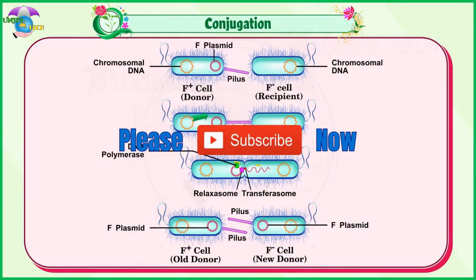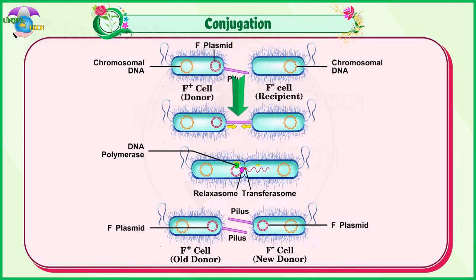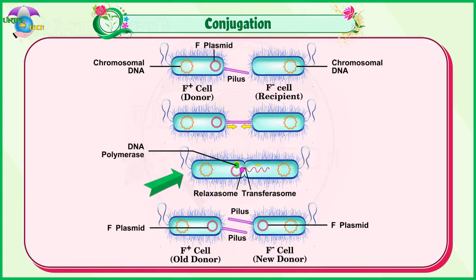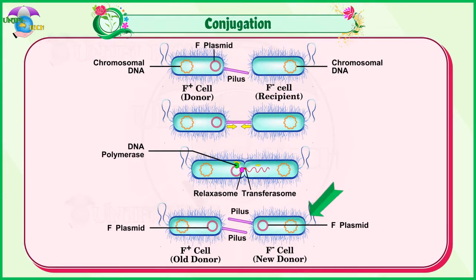In this method of gene transfer, the donor cell gets attached to the recipient cell with the help of pili. The pilus grows in size and forms the conjugation tube. The plasmid strand of the donor cell, which has the F+ factor, undergoes replication. Only one strand of DNA is transferred to the recipient cell through the conjugation tube. The recipient completes the double-stranded DNA by synthesizing the complementary strand acquired from the donor.